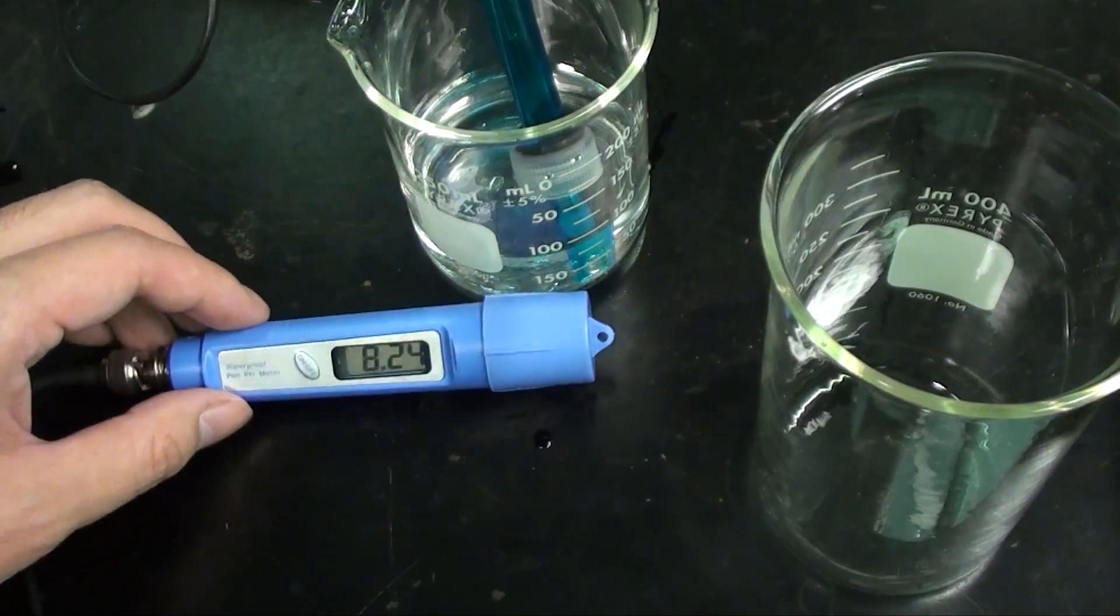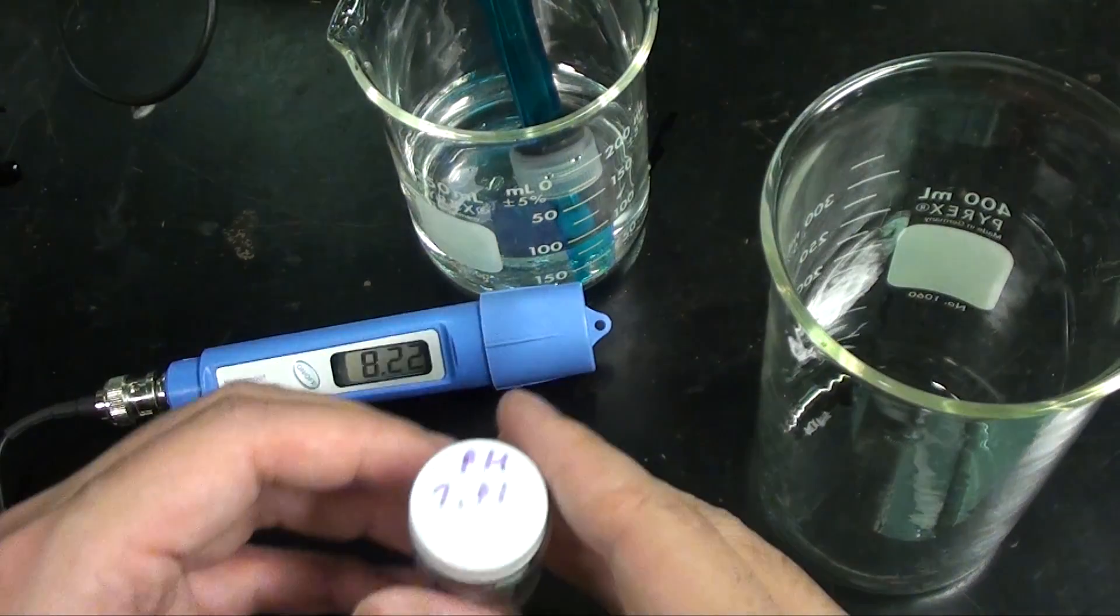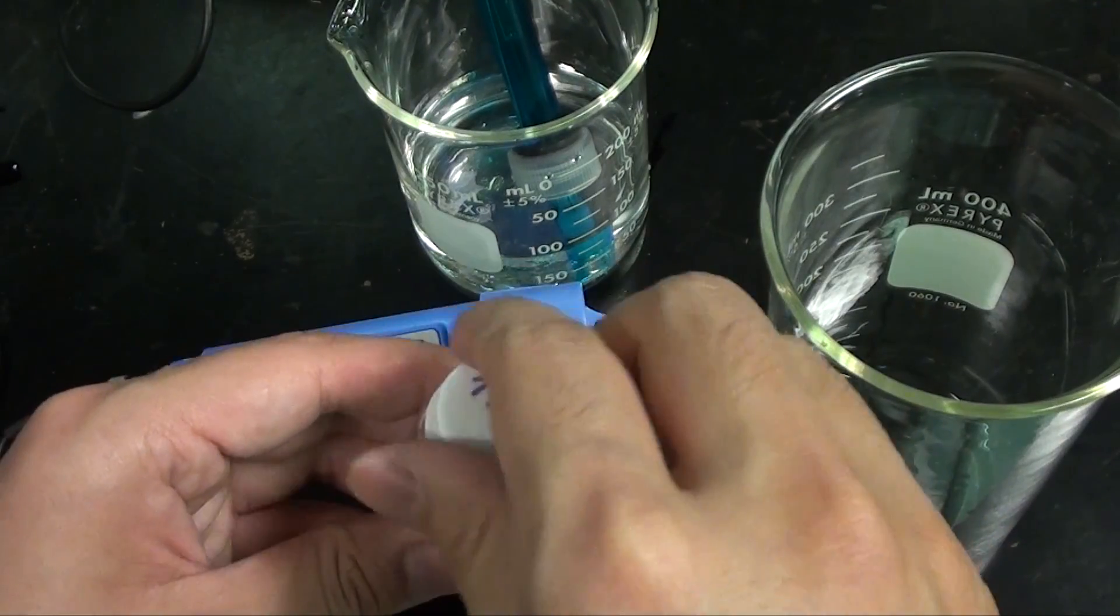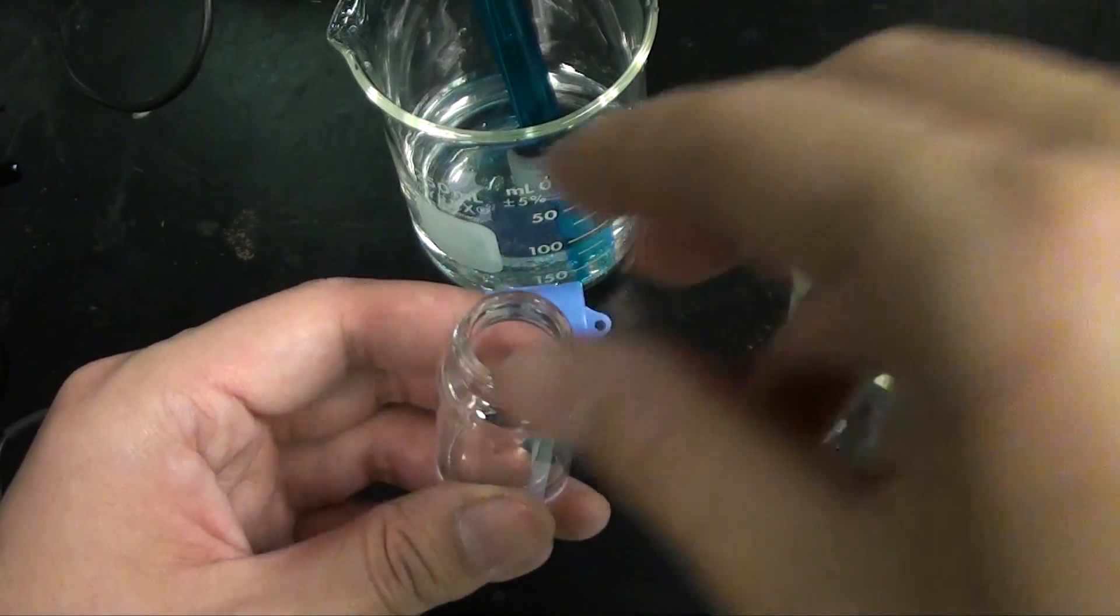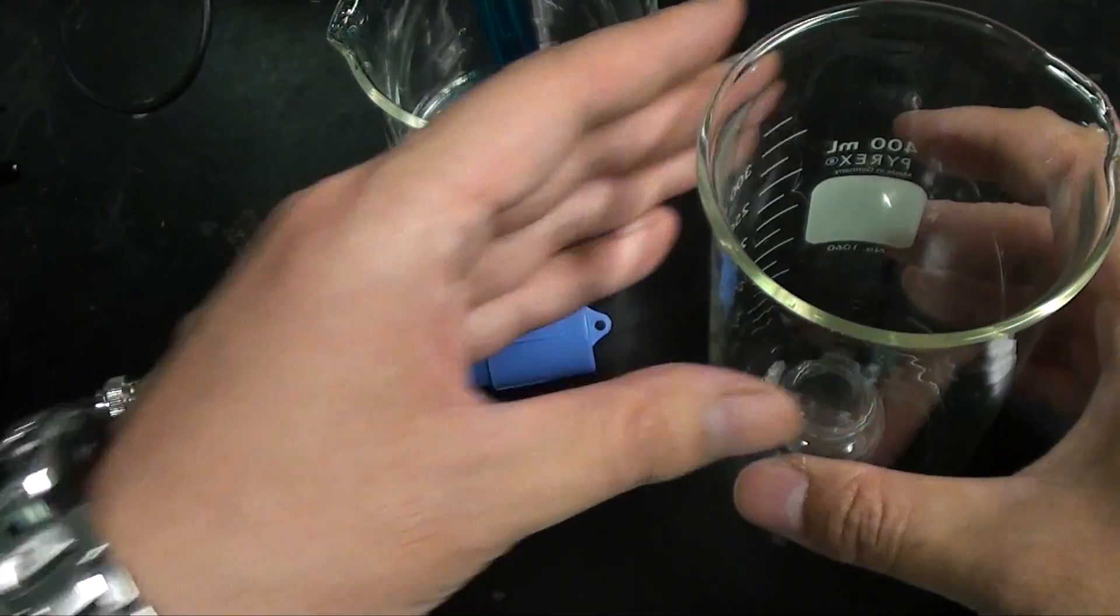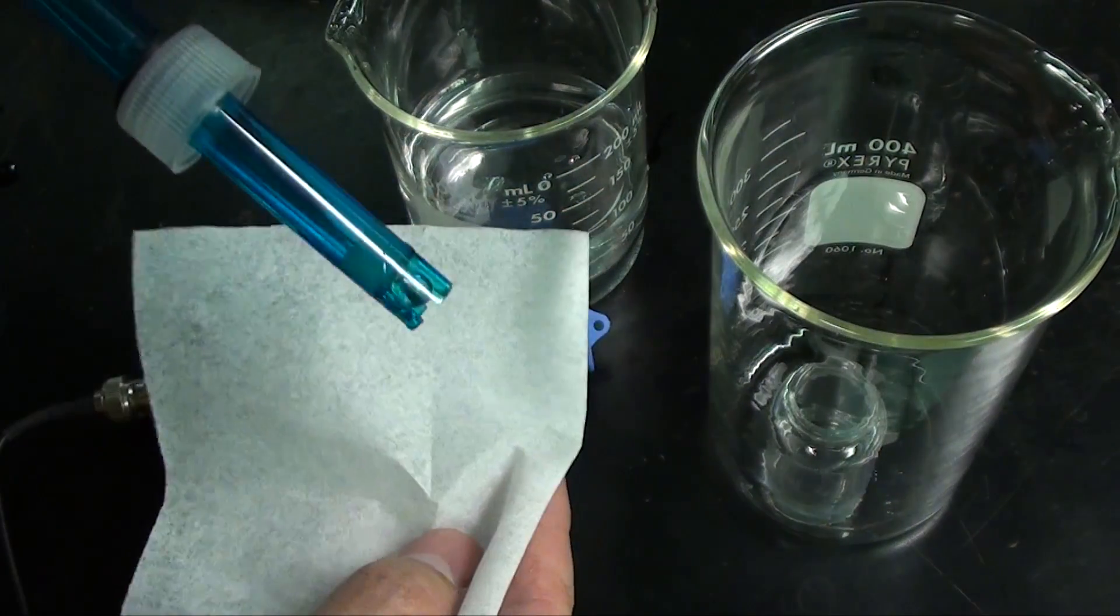So here is a sample of the calibration solution. This particular one has a pH of 7.01 at 25 degrees Celsius, which is the current temperature of my lab. I'm putting it in the beaker because the vial can't hold the electrode by itself.